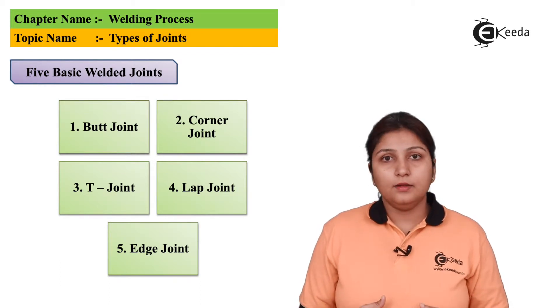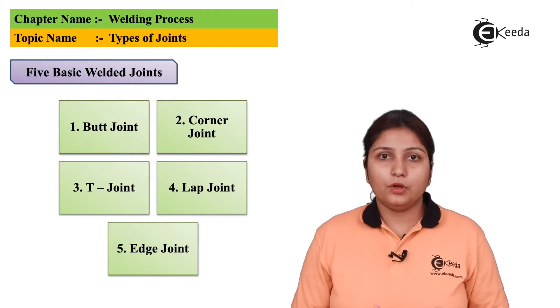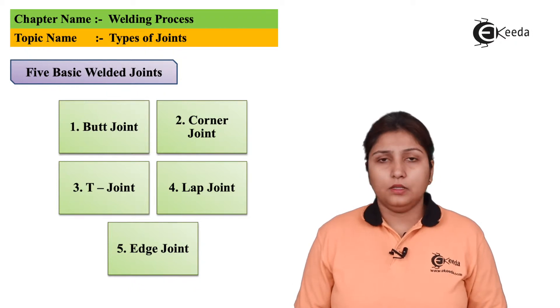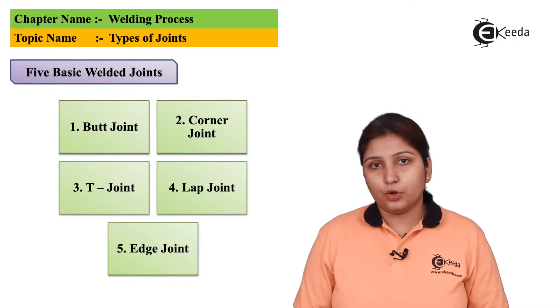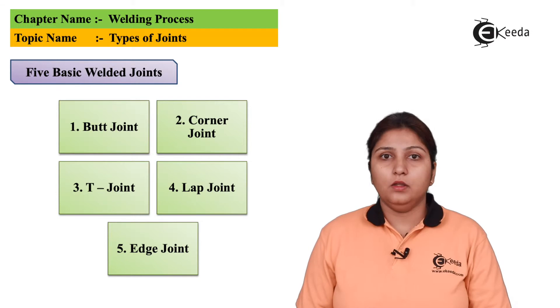The first joint is butt, T joint, lap joint, edge joint, etc. These are some basic types of joints. We'll go one by one into this.